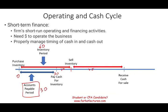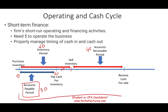From the time you sold the inventory until the time you received the cash, we call this the accounts receivable period — and we said that's 45 days. From the time you started until the time you received the money, 60 plus 45 is 105 days. We call this 105-day period the operating cycle.